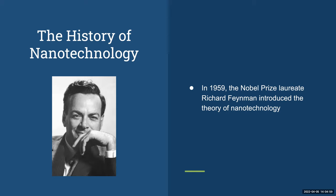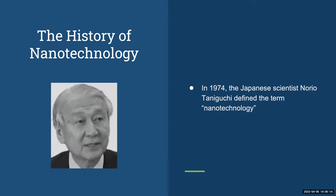In the history of nanotechnology, in 1959, Nobel Prize laureate Richard Feynman introduced the theory of nanotechnology. In 1974, Japanese scientist Norio defined the term nanotechnology as mainly consisting of the processing of separation, consolidation, and deformation of material by one atom or one molecule.